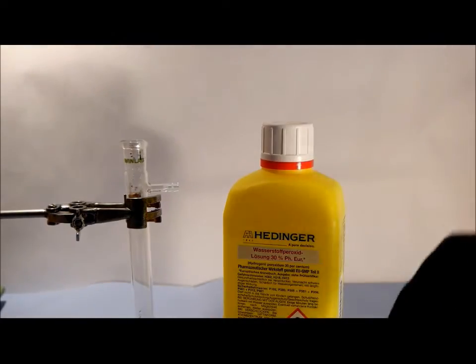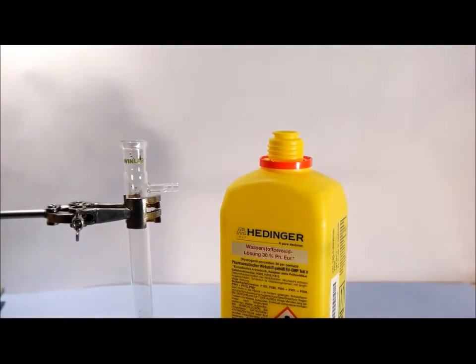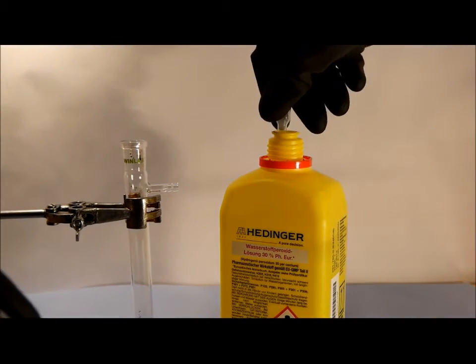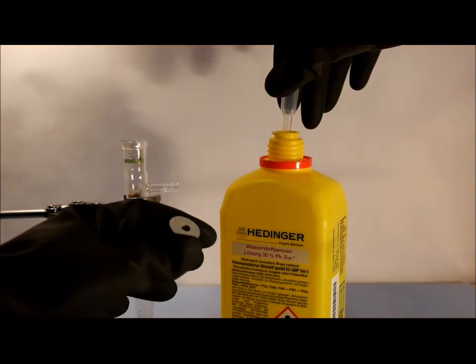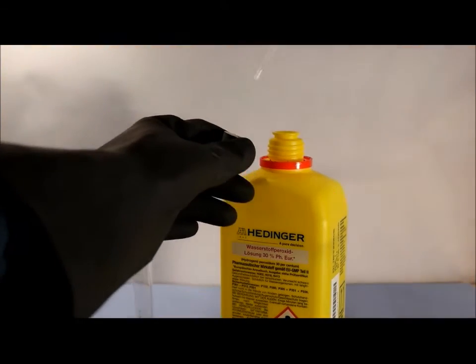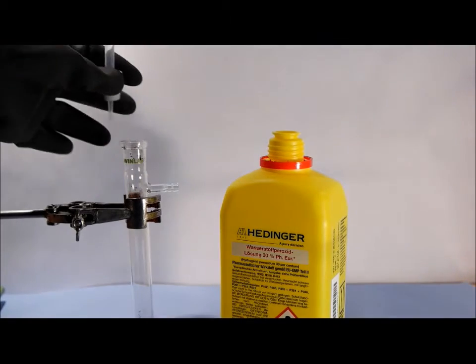Now take some drops of the hydrogen peroxide in a pipette and then stick it in a stopper like this one. Now you can put it on your test tube.